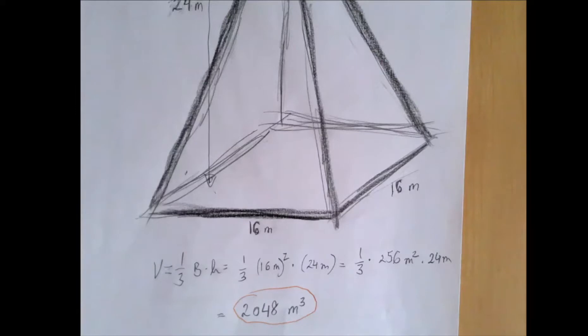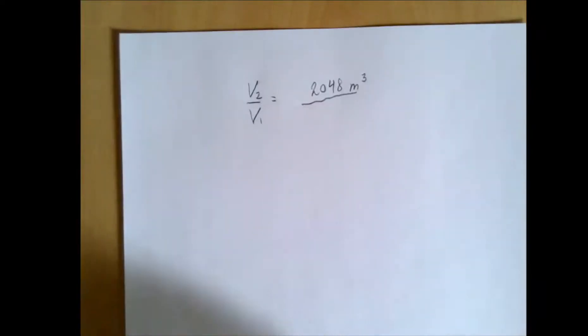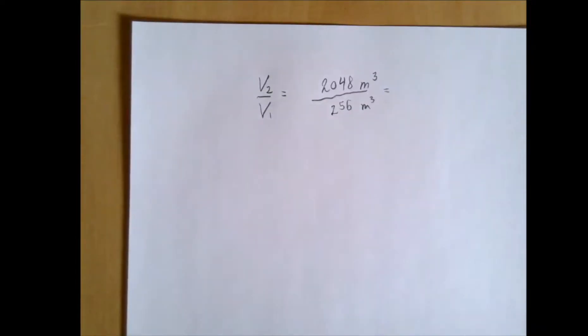Now the next question is what happened to the volumes? We doubled all sides and the height, but what will happen to the volumes? So the big pyramid had a volume of 2048 cubic meters, and the original had 256 cubic meters. And so when we divide 2048 by 256, we get 8.